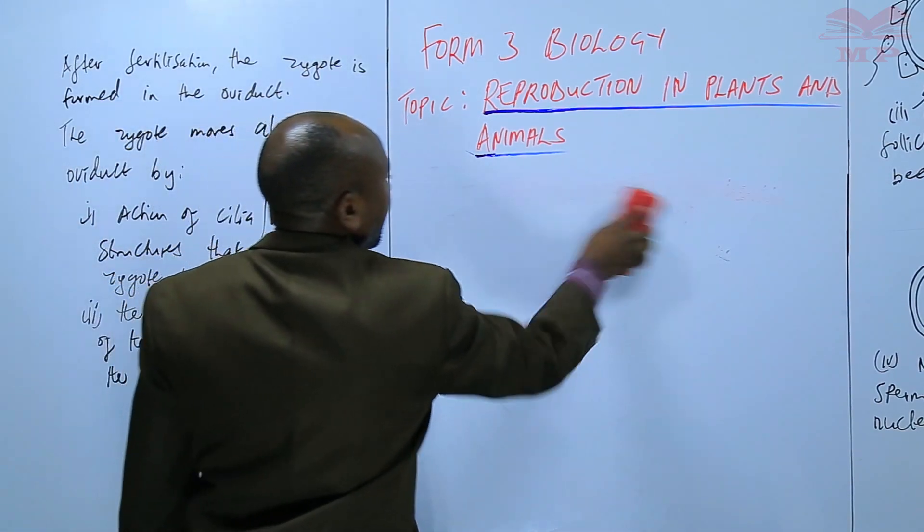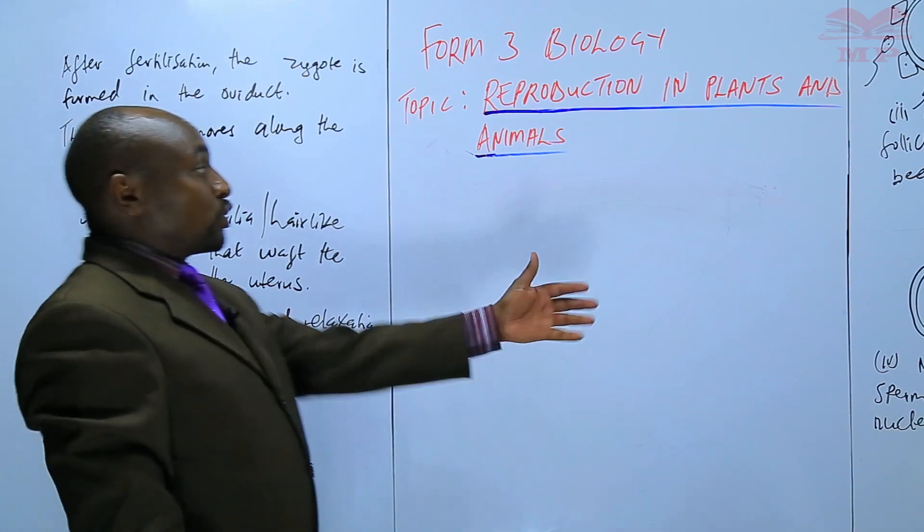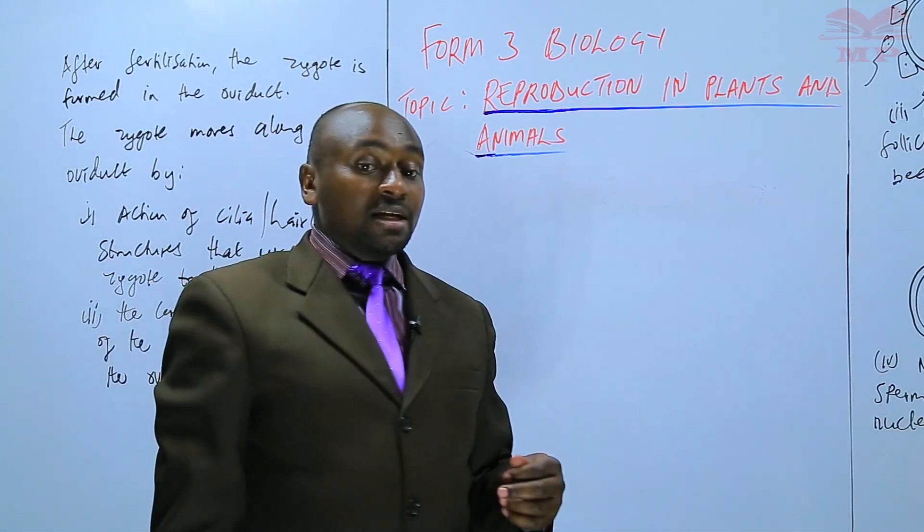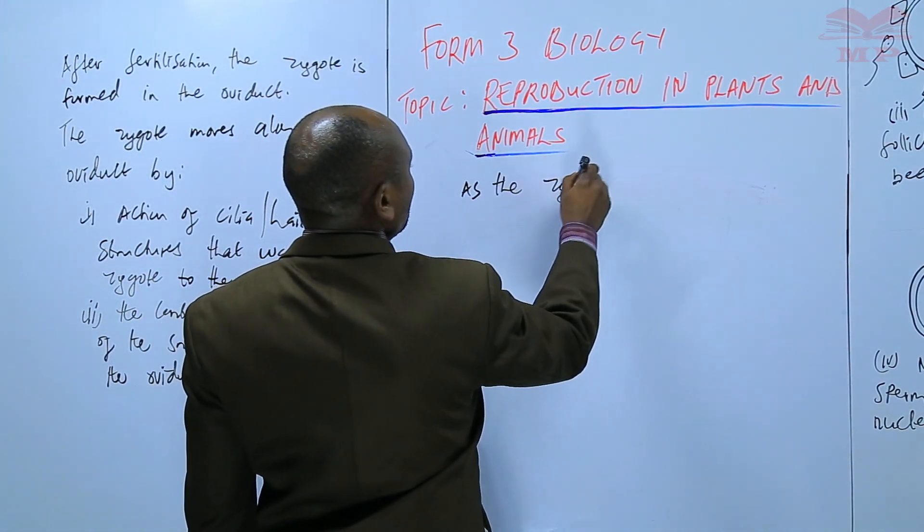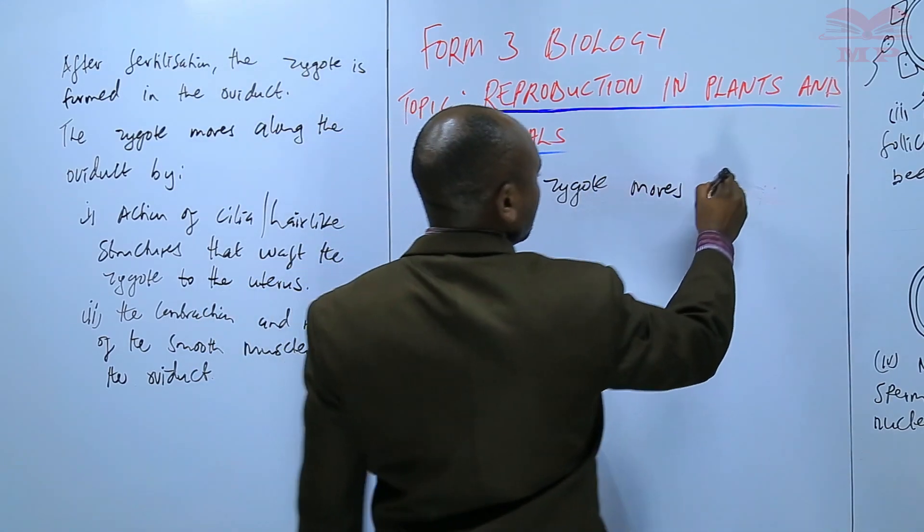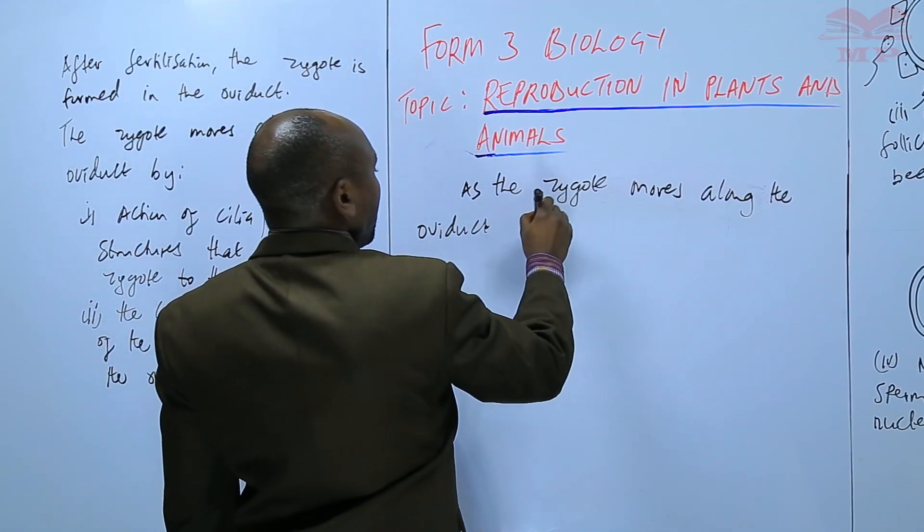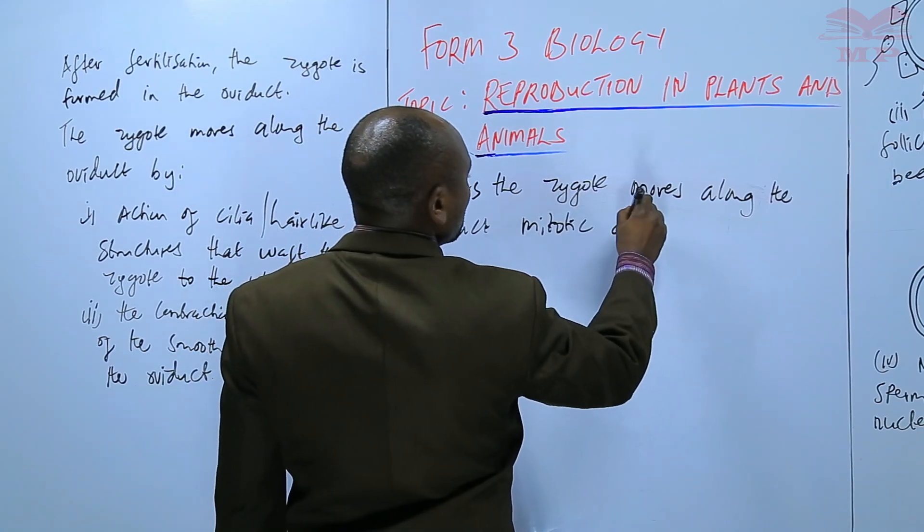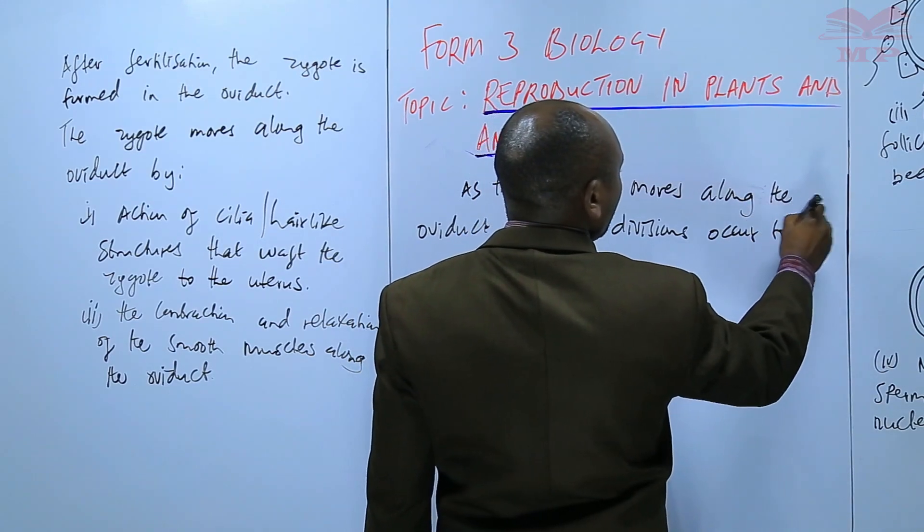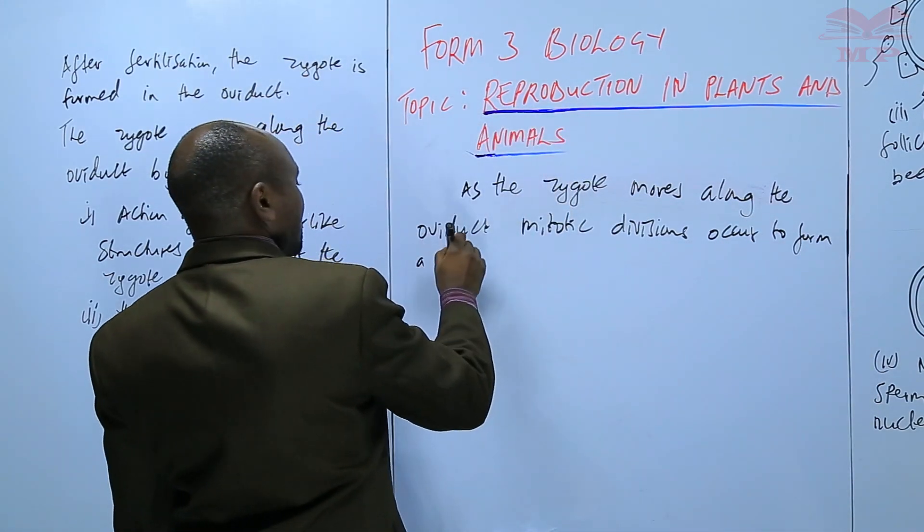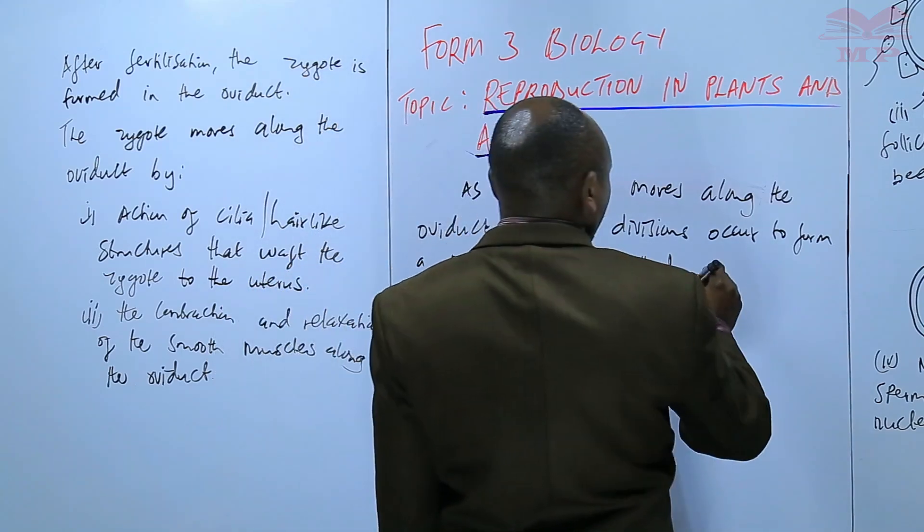It is also good to note that as the zygote moves along the oviduct, it continues to divide and the number of cells continue increasing. As the zygote moves along the oviduct, mitotic divisions occur to form a mass of cells called a blastocyst.